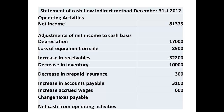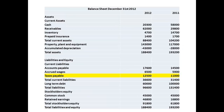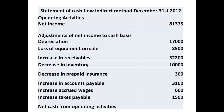Finally, we look for taxes payable. The balance sheet shows that taxes payable have increased from $11,000 to $12,500. We add back the sum of $1,500. We can now calculate the net cash from operating activities, which gives us a figure of $84,175.